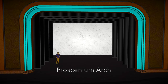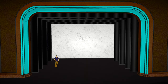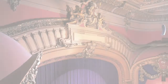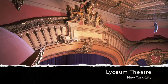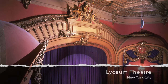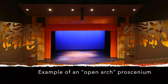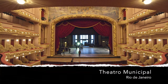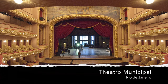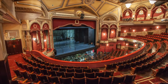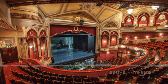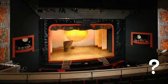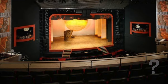In a proscenium theatre, the proscenium arch acts as a frame through which the action can be seen, and describes any staging configuration in which the audience faces the stage directly. Most theatres built after the 1950s have an open arch, which is essentially an undecorated aperture in the wall, but some may be embellished and ornate depending on the time period they were constructed. Here are some examples of prosceniums from various theatres. What are some details you notice? What are some architectural differences?